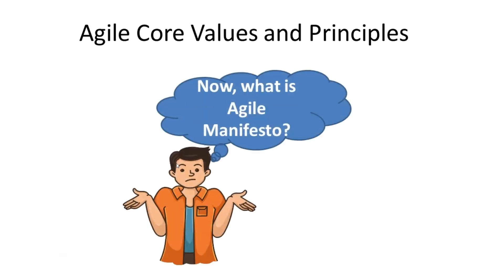Agile manifesto is a fundamental document that supports Agile software development. As of today, it is used in other business sectors also to improve the quality of products and services. It was an outcome of a meeting of 17 developers which happened in the year 2001. The outcome consisted of 4 Agile values and 12 Agile principles.